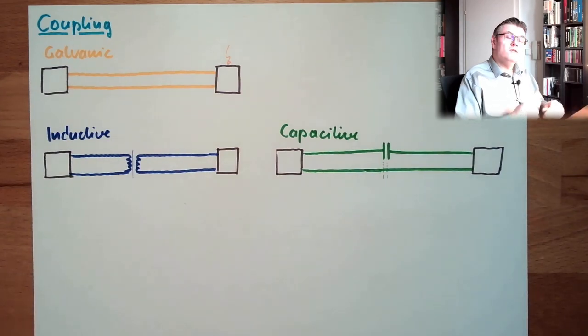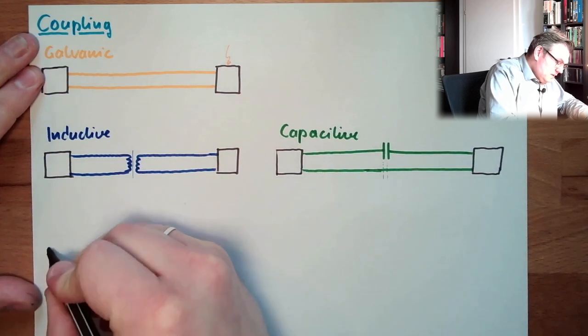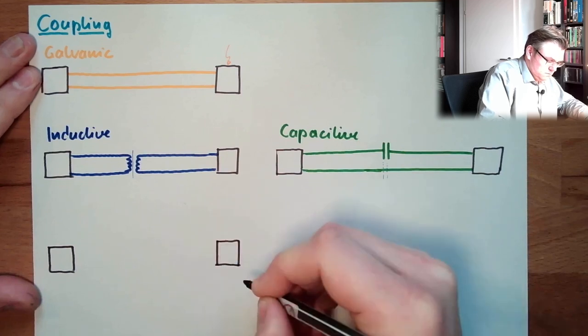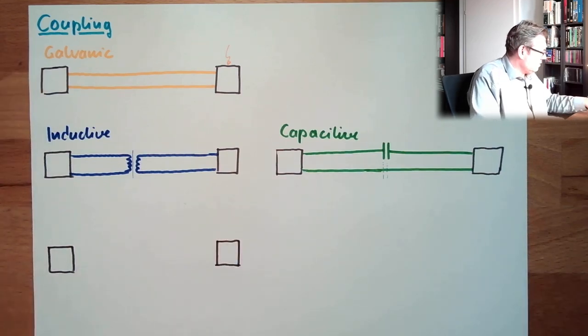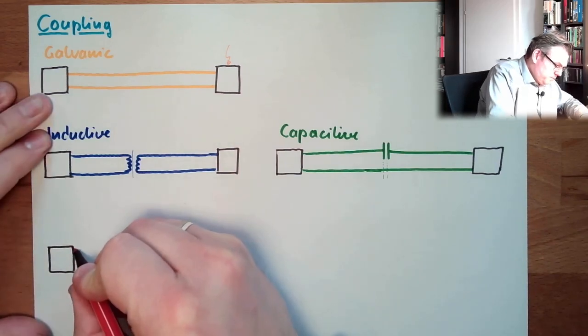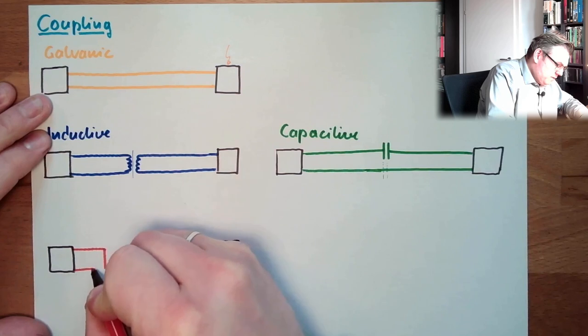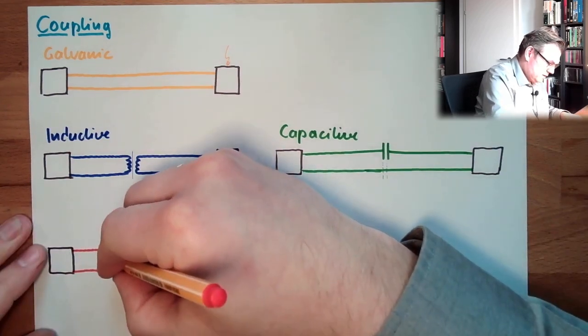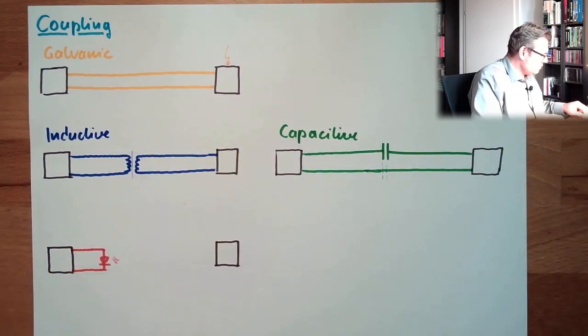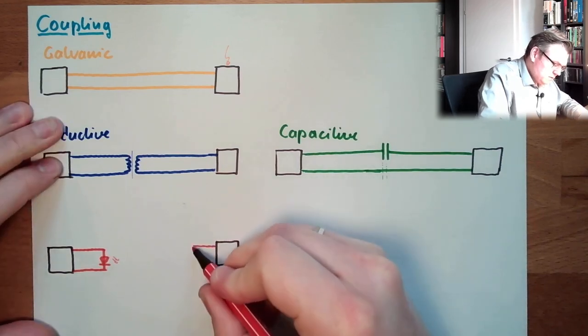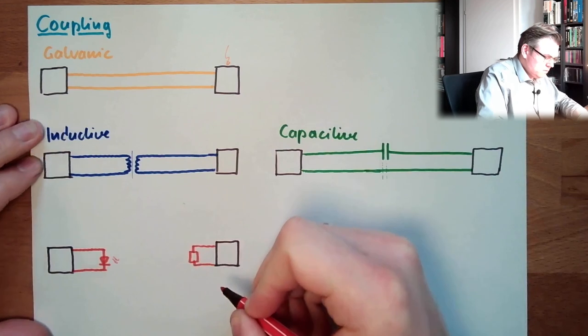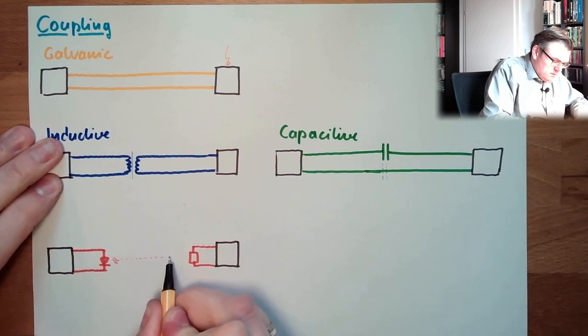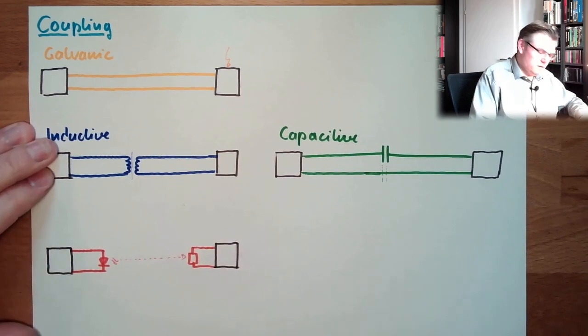Another possibility to isolate two things is simply by using here... Here, back, we will drive an LED. So we have an LED. Here, we have a photoresistor, and in between, we have light.